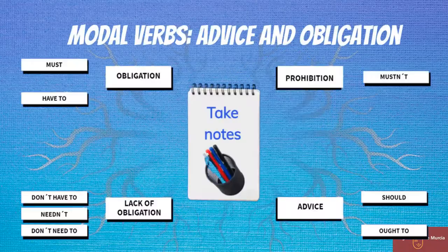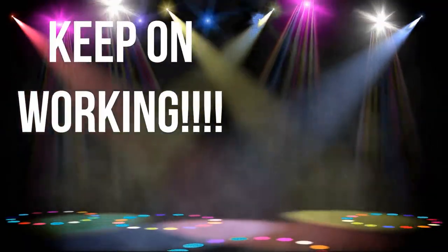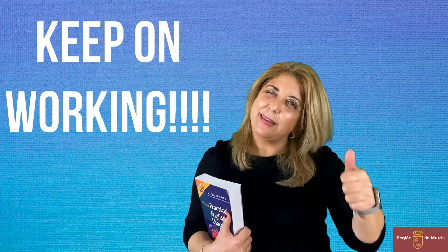To wrap up this video, let's summarize the main points. We have seen that we can use 'must' for obligation, 'mustn't' for prohibition, and 'should', 'had better', or 'ought to' for advice. Well, that's all for now — keep on working, because practice makes perfect!